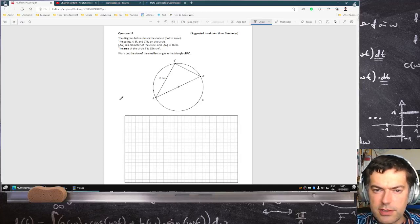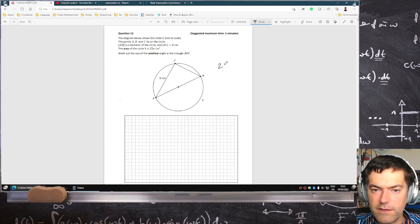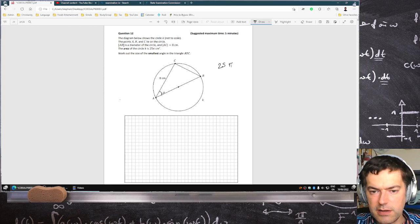All right, the diagram below shows a circle and at the scale, the points ABC lie on the circle. AB is the diameter of the circle and AC is 8, the area of the circle K is 25π centimeters squared. Work out the size of the smallest angle in the triangle ABC, so that would be this angle here.